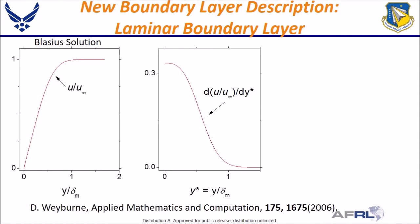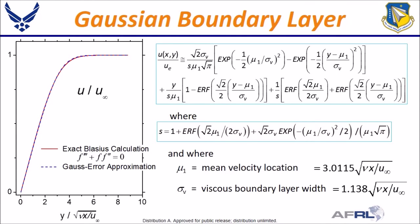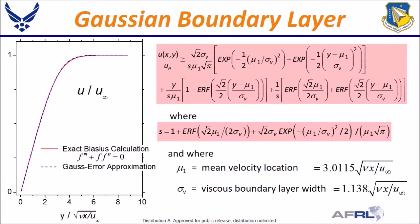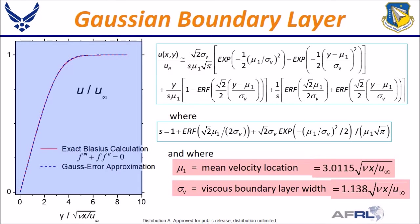Now take the derivative with respect to the stretched distance above the plate y divided by delta sub m. Take the derivative again and we end up with this second derivative curve. Take a good look at this curve — I think you will agree that this looks very much like a Gaussian curve. In fact, if one assumes the second derivative of the velocity is actually a Gaussian curve and integrates it twice with the appropriate boundary conditions, one obtains the exponential error function shown here. This two-parameter curve is plotted along with the Blasius solution, where the error exponential function uses mu sub 1 and sigma sub v values calculated from the velocity solution — no adjustable parameters. The overlap is outstanding.